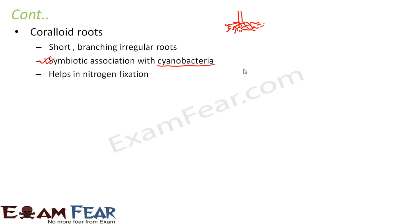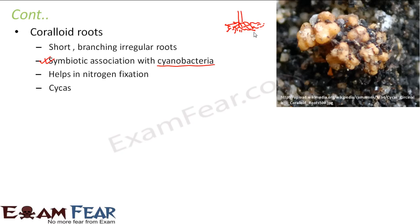The cyanobacteria contained in the cortex of these roots help in nitrogen fixation. An example is cycas, which has coralloid roots — these are the root nodules of cycas. Examples of cyanobacteria that help in nitrogen fixation are Nostoc and Anabaena. These bacteria are present in the outer layer of the roots and fix nitrogen to the soil.